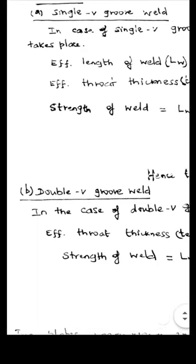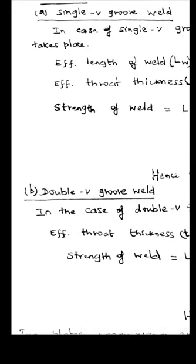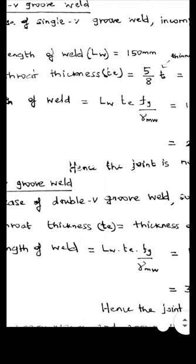The first part is over. Let us solve the second part of this problem. Second part of the problem is the welding is done on both sides, that is why they have called it a double V groove weld. Groove weld is also known as a butt weld. In this case welding is done on both sides.